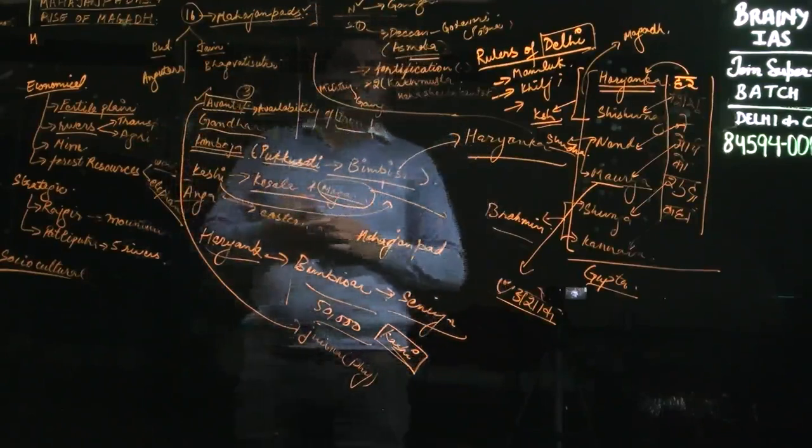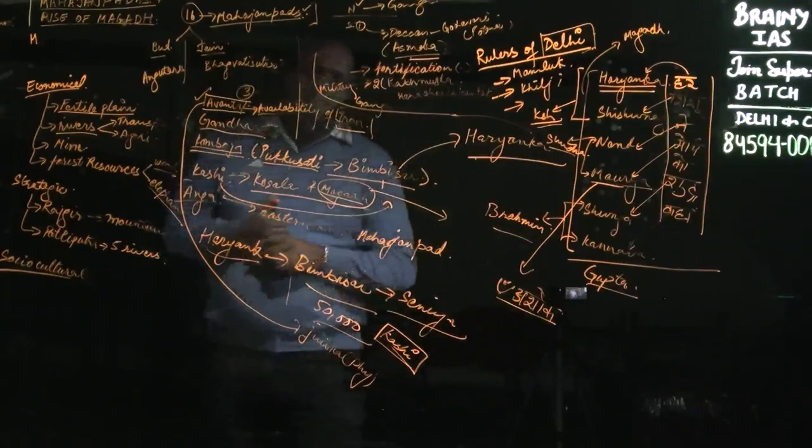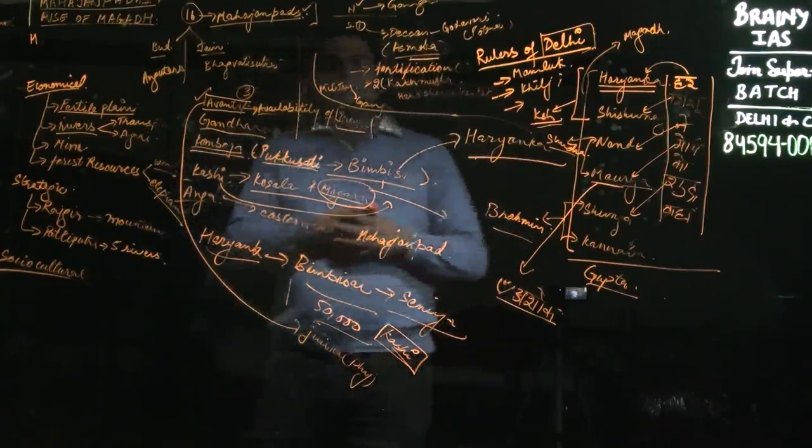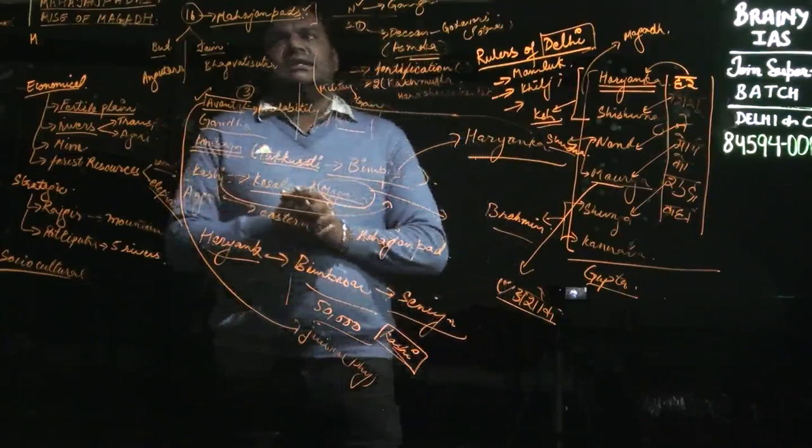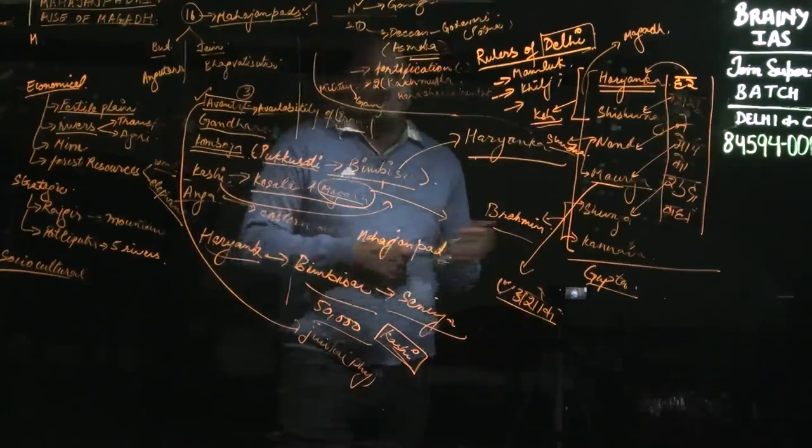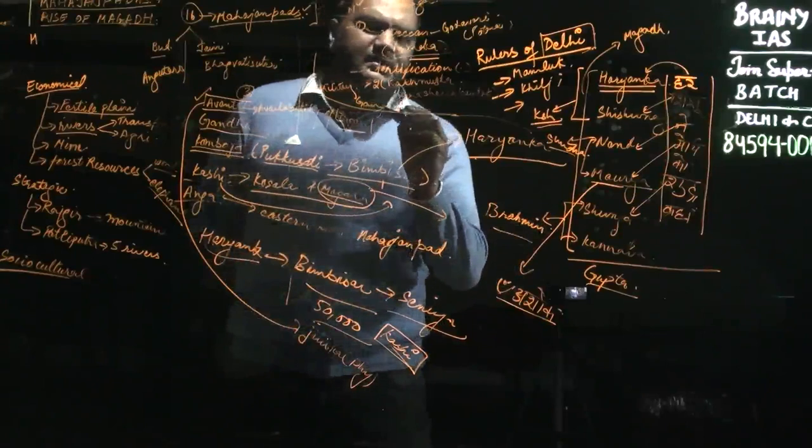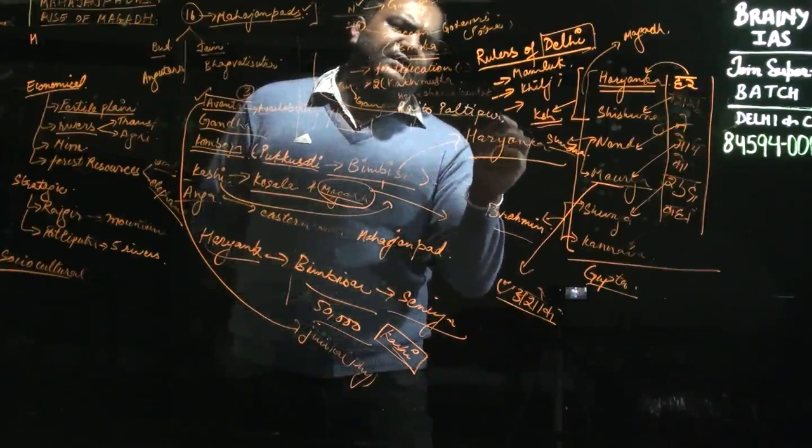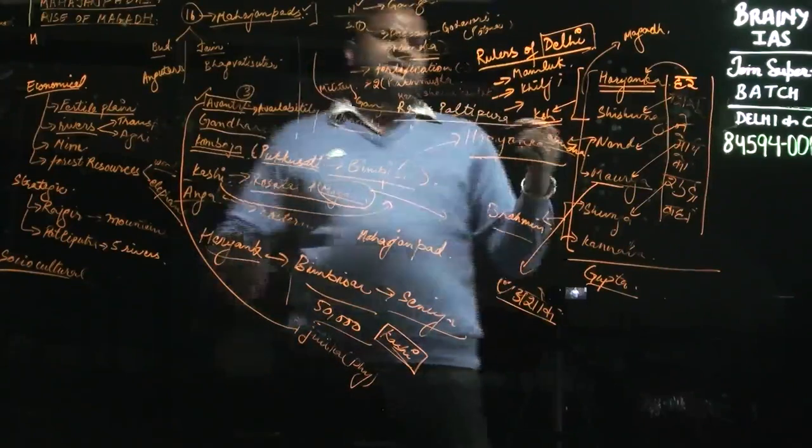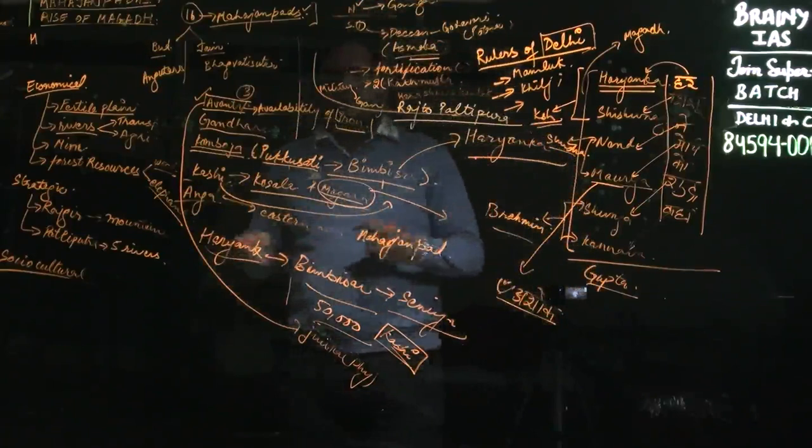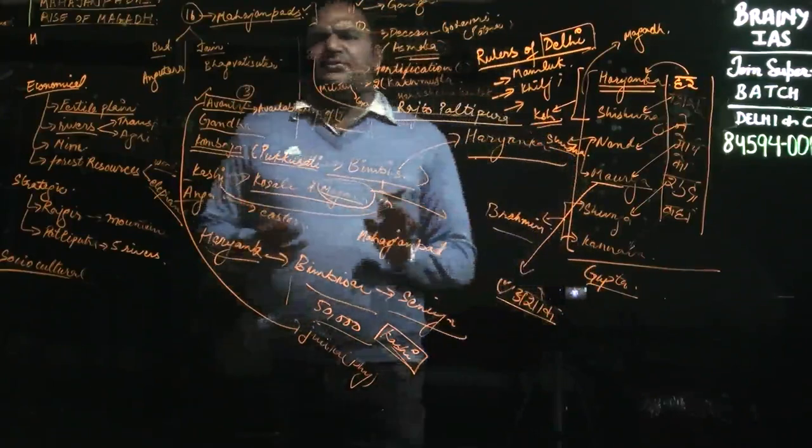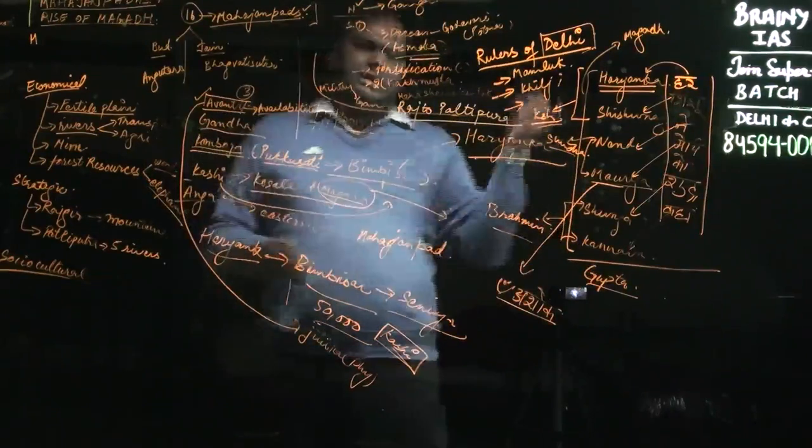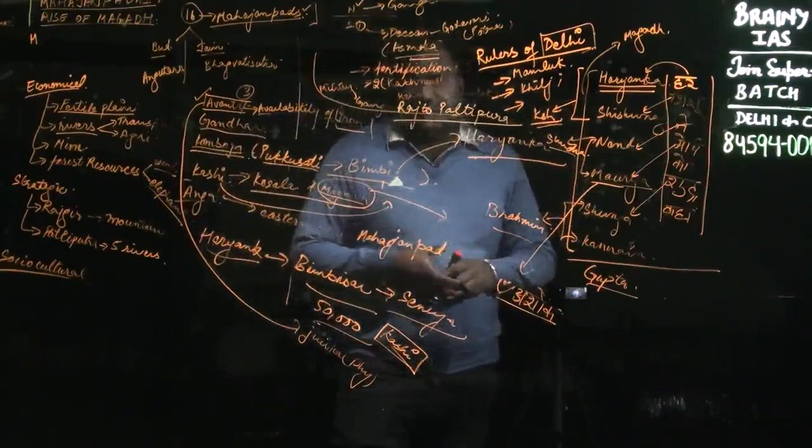The next important ruler of this Haryanka dynasty is Udayin. Udayin is important because he shifted his capital from Rajgir to Pataliputra. You don't require to know who is a son, who is a father, or who killed whom for UPSC exams, but in essay questions you might need detailed answers. This was related to the Haryanka dynasty.